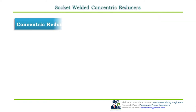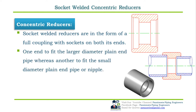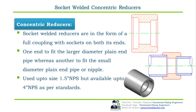Socket welded concentric reducers are in the form of a full coupling with sockets on both ends; they are also called reducing couplings. One end is formed to fit the large diameter plain end pipe, whereas the other fits the small diameter plain end pipe or nipple. They are used up to line size 1.5-inch NPS but are available up to 4-inch NPS. The dimensional standard is ASME B16.11.